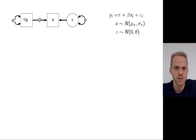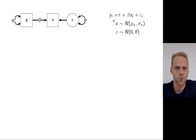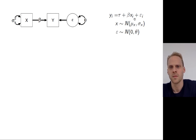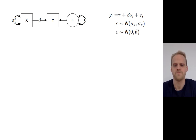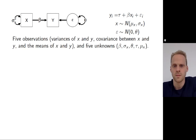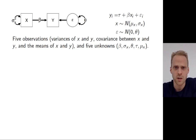Y equals beta times X plus the residual epsilon. You can also include the intercept tau, so Y equals tau plus beta times X plus the residual. This residual also has a standard deviation theta. In the univariate form we usually denote with standard deviations; in the multivariate form it's variances. This model implies a certain causal model for Y, and we can fit this model to the variance-covariance structure and the mean structure, just like we fitted our CFA model.